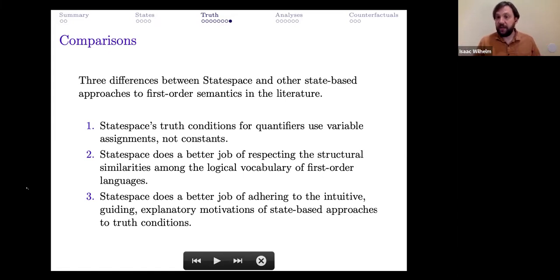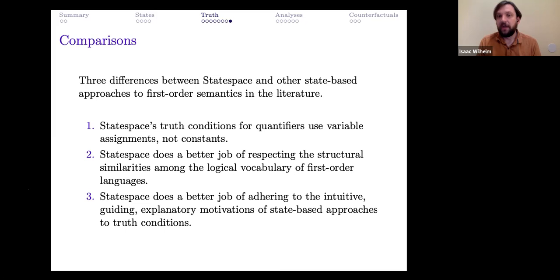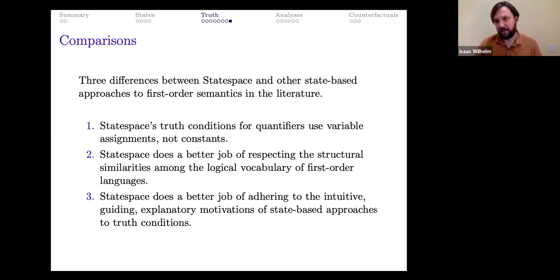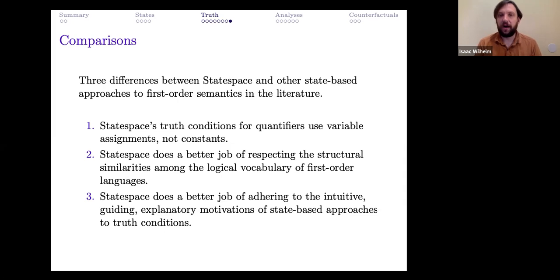Third, state space better adheres to the intuitive guiding explanatory motivation: to make a sentence true or false is to have parts which make the parts of that sentence true or false. Other theories don't fully honor this for disjunctions — they say to make a disjunction true is for you yourself to make the parts true. State space captures the guiding idea more faithfully.